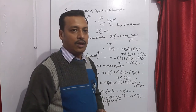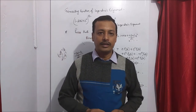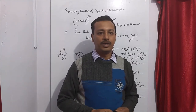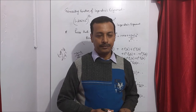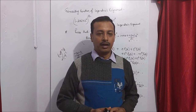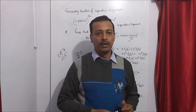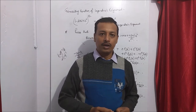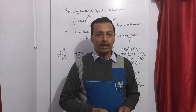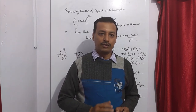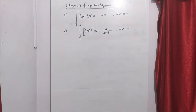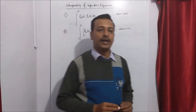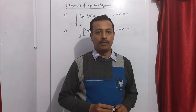Next we look at the orthogonal property of Legendre Polynomial. For two different Legendre polynomials, we will find their orthogonal property — what value we get when both polynomials have equal index values, and what value when the index values are different.